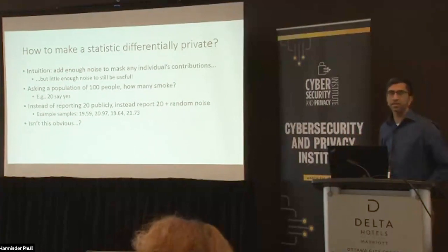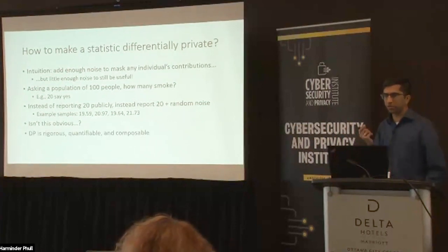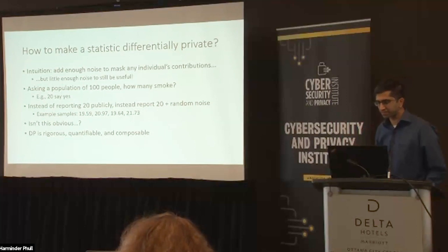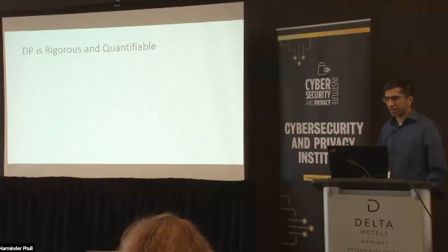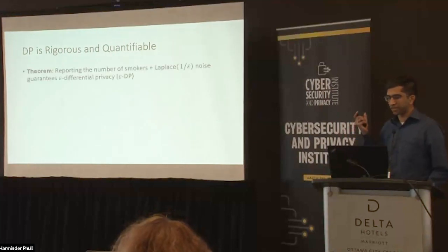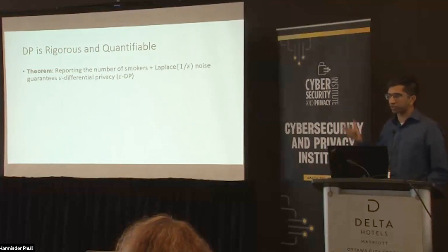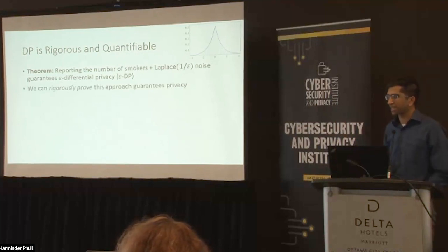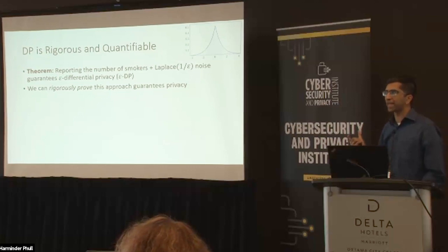While it's true this is an intuitive solution, the nice thing about differential privacy is it allows you to rigorously reason about how much noise to add and how private it is as a result. To hammer this home: there's a theorem that if you take the number of smokers and add noise sampled according to a Laplace distribution with parameter one over epsilon, this guarantees epsilon differential privacy. The Laplace distribution is a two-sided exponential. There is a theoretical guarantee — it's possible to prove this disclosure is differentially private, and you can understand rigorously the downstream effects of releasing a differentially private statistic.